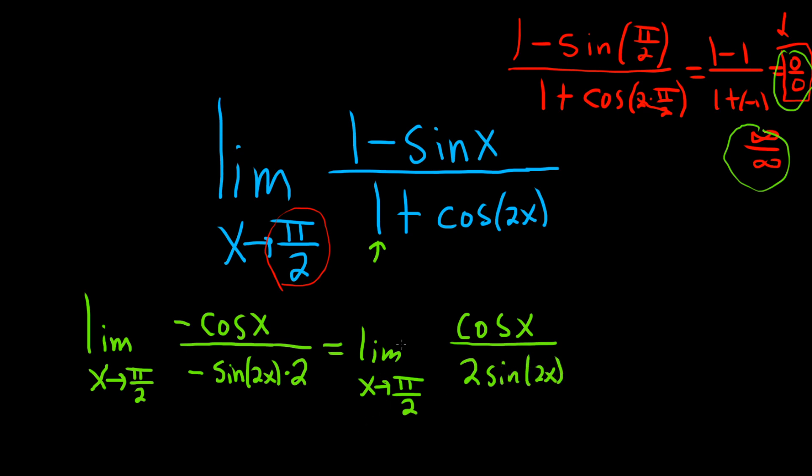So you have to think a little bit here. What happens if we plug in pi over 2? So up top we'll get cosine of pi over 2, and on the bottom we'll get 2 times the sine of 2 times pi over 2. So sine of pi is going to be 0 and cosine of pi over 2 is going to be 0. So we still have 0 over 0 here.